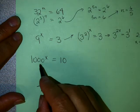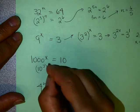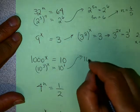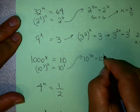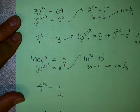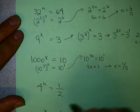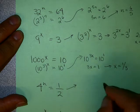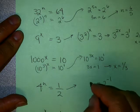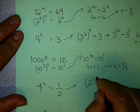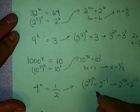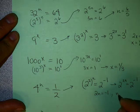Similarly, 1000 is 10 to the 3rd, and I'll write 10 as 10 to the 1st. That gives you 10 to the 3x equals 10 to the 1st, so 3x equals 1 and x equals 1 third. You can also use these with negative exponents. 1/2 is 2 to the minus 1, and 4 can be written as a power of 2. So that gives you 2 to the 2n equals 2 to the minus 1, so 2n equals minus 1 and n equals minus 1 half.